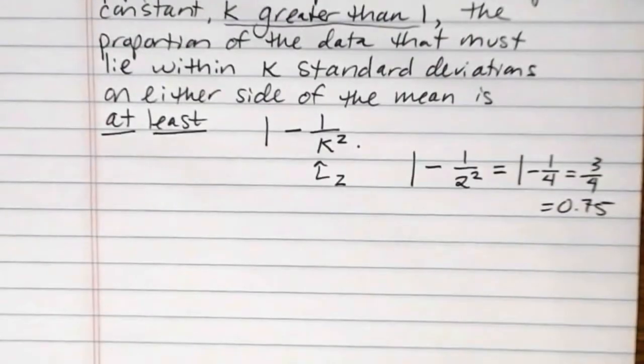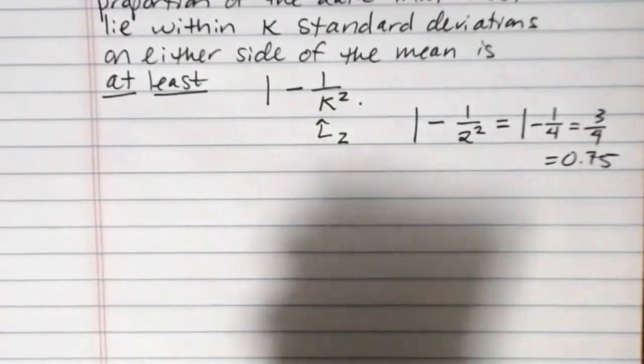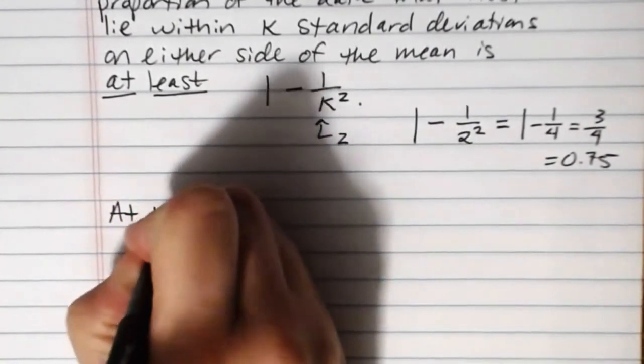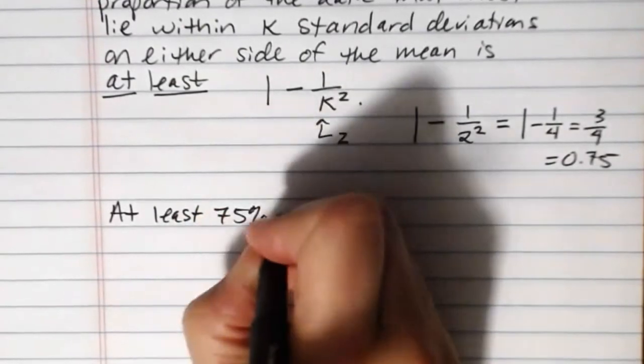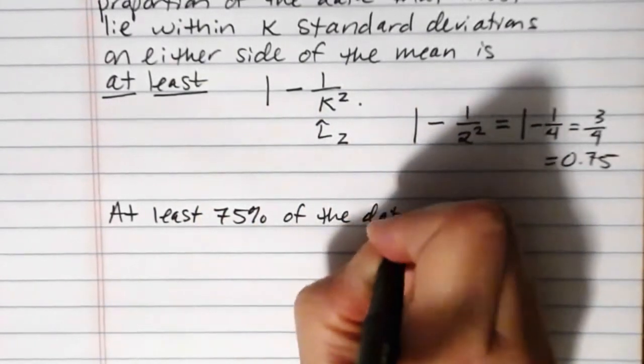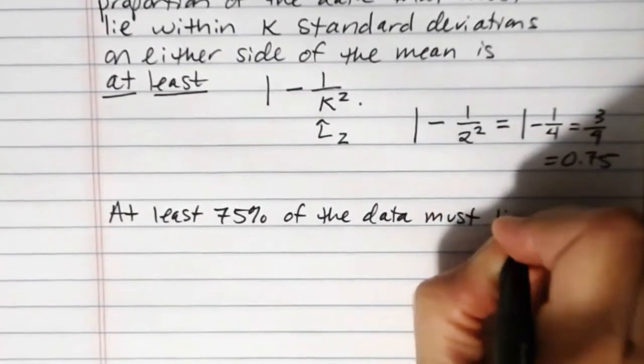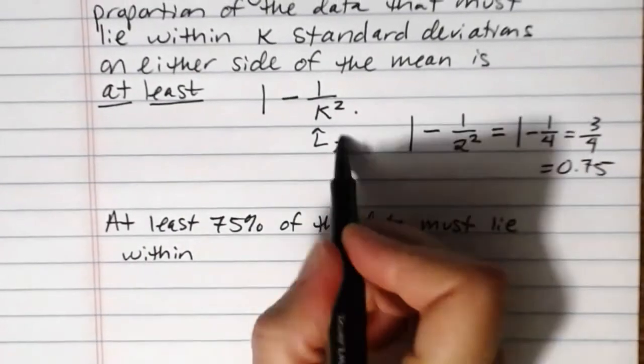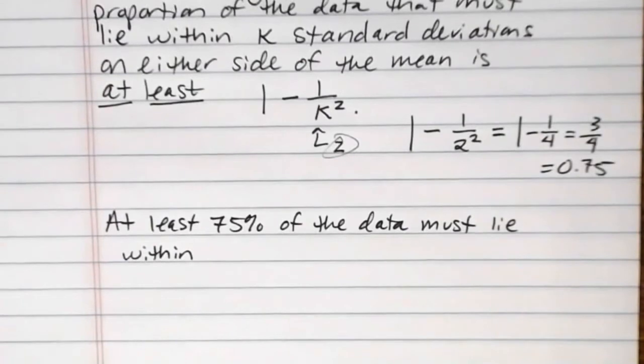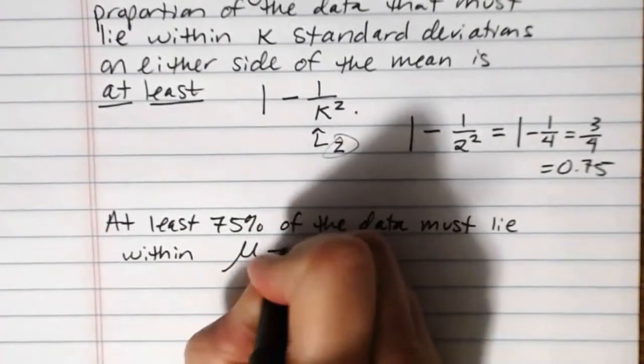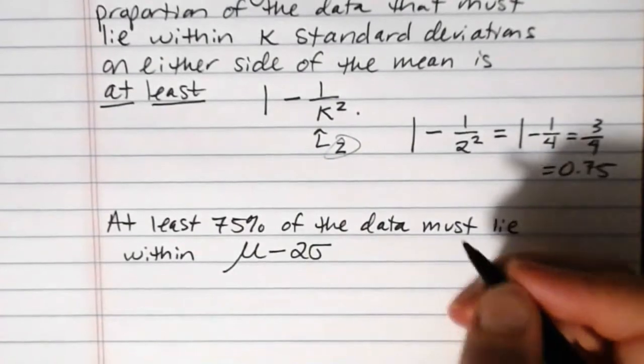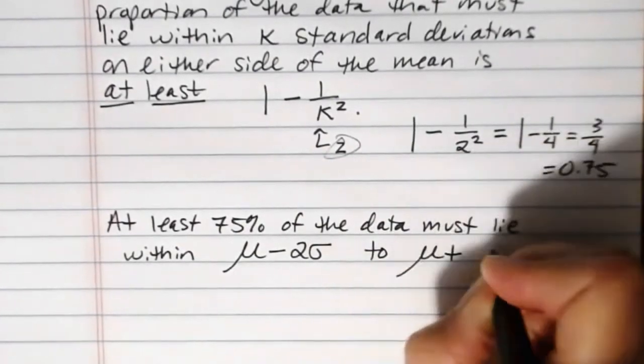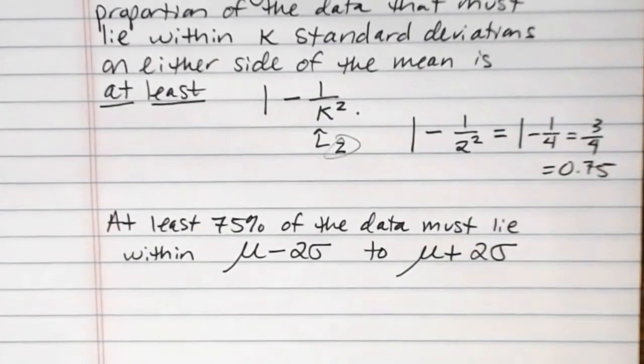And so what that tells me from Chebyshev's theorem is that at least 75% of the data must lie within 2 standard deviations on either side of the mean. So that would be the mean minus 2 times the standard deviation to the mean plus 2 times the standard deviation. At least 75% of the data is going to lie within 2 standard deviations on either side of the mean.